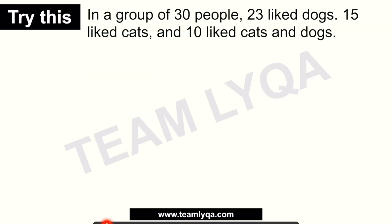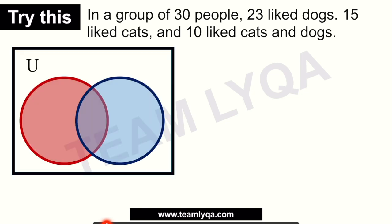Now let's look at a more complex condition: you are in a group of 30 people. 23 like dogs, 15 like cats, and 10 like both cats and dogs. Set A (red) represents people who like dogs, and set B (blue) represents people who like cats. We'll now fill in our Venn diagram with this information.